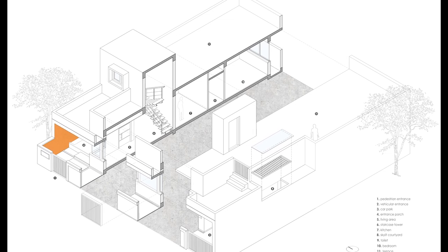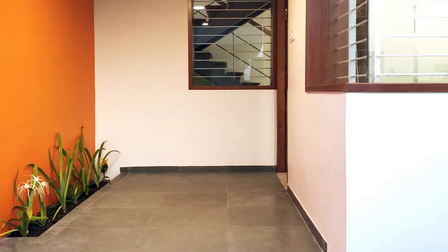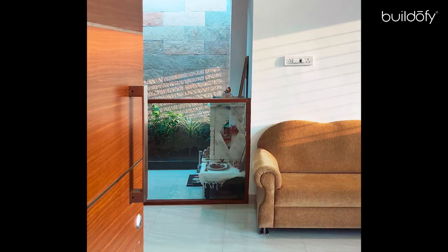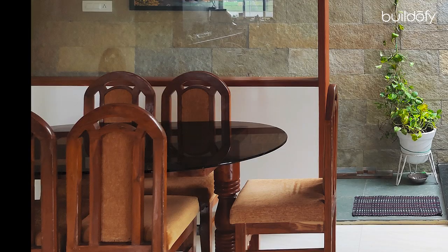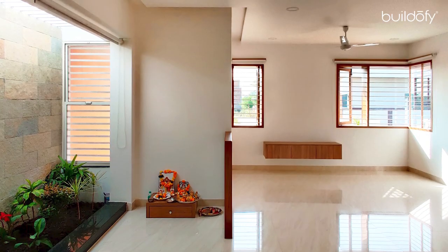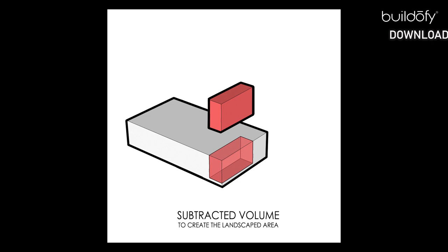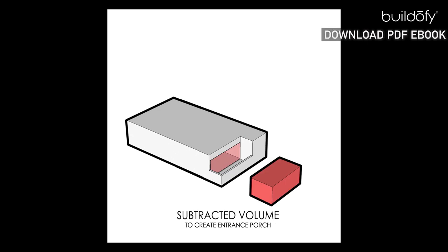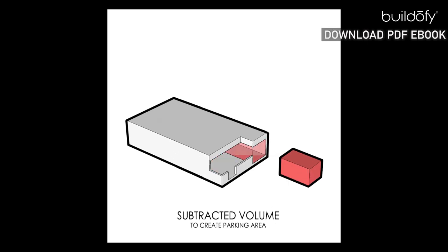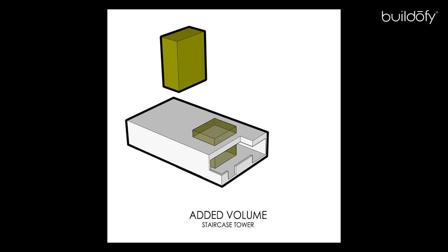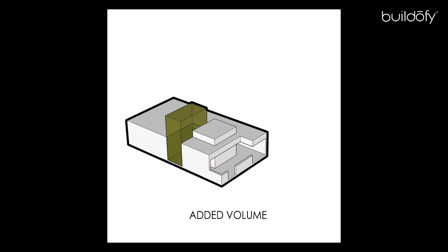One is the extroverted zone, comprising the entrance foyer, living and dining area, looking towards the street. The massing of the house is fairly simple and is based on the basic design principle of addition and subtraction of volumes.